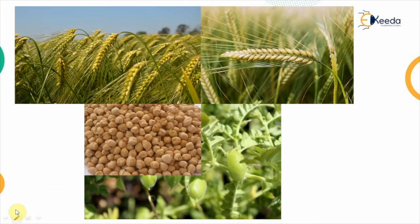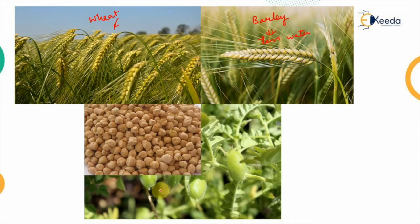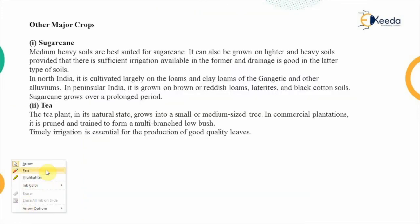Looking at the images: the first crop represents wheat and the second represents barley — looking closely, you would not easily differentiate between these two crops. However, barley requires less water, making it suitable for dryland areas. The gram crop is harvested with its coverings, and when these covers are removed the gram seeds are obtained.